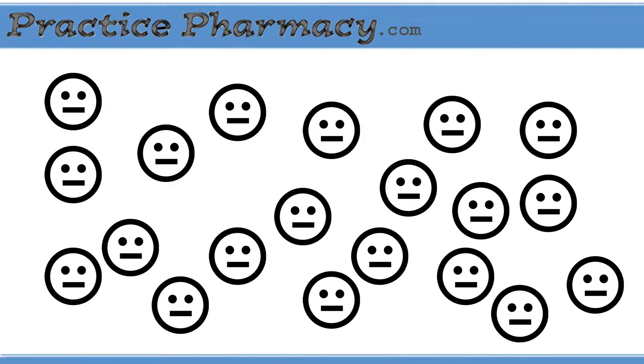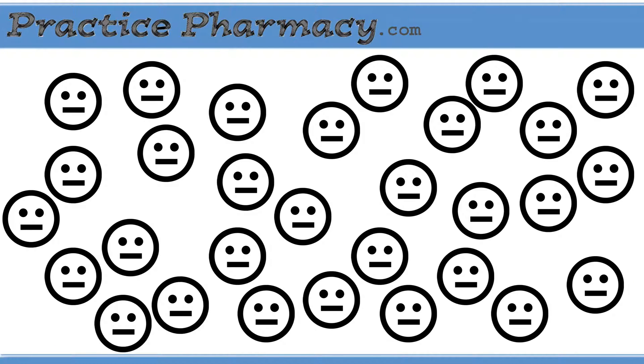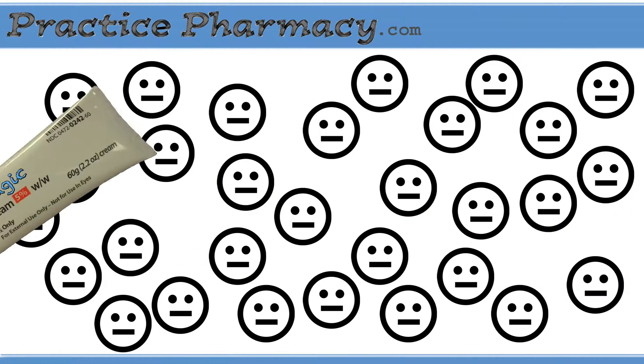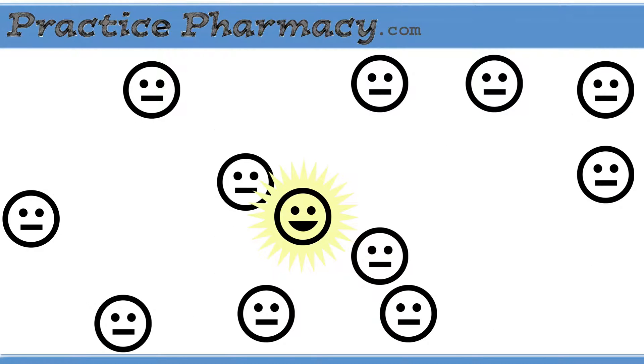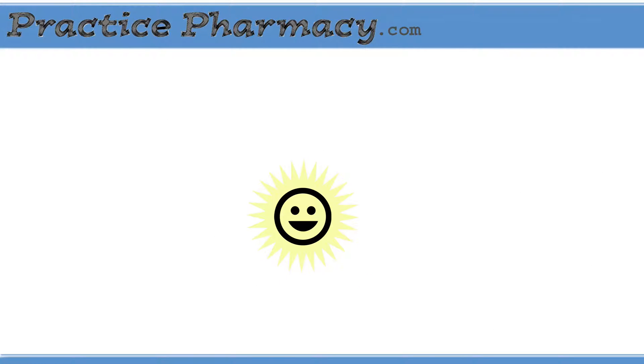What is it? It's the number of people that have to be treated with a medication in order to prevent one occurrence of the unfavorable event — in other words, the illness.